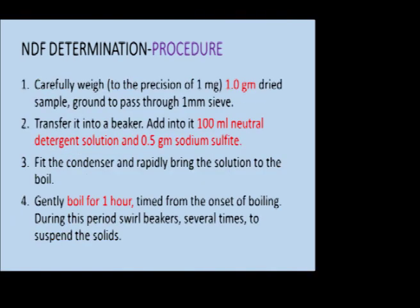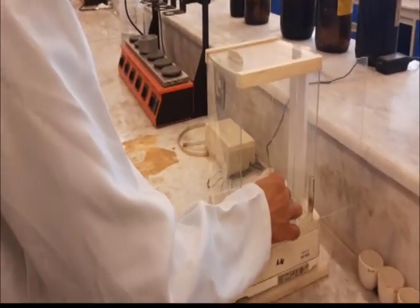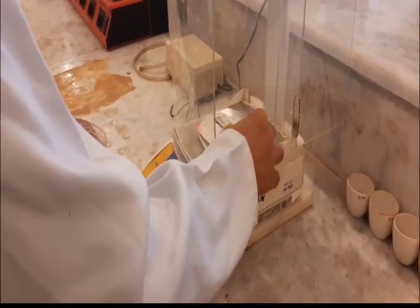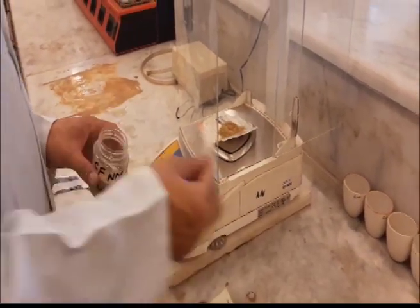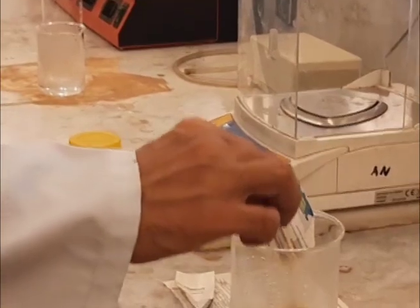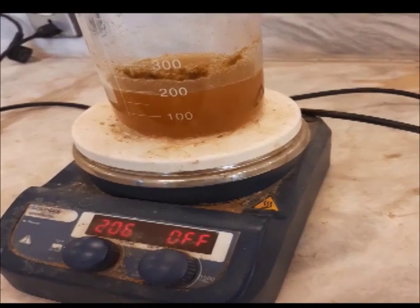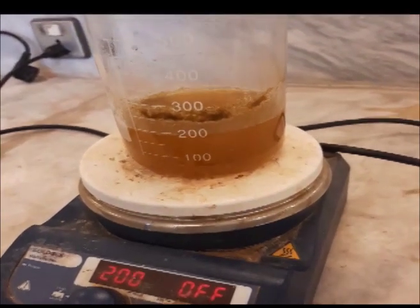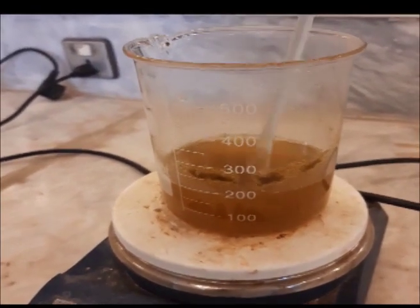For the protocol, weigh 1 gram of dried feed sample precisely, and it should pass through a 1 millimeter sieve — that sample is suitable for NDF determination. Transfer this 1 gram into at least a 500 ml beaker and add 100 ml of NDF solution along with 0.5 grams of sodium sulfite. Then start heating on the hot plate. When the solution starts boiling, count for 1 hour — boiling should be maintained for 1 hour.